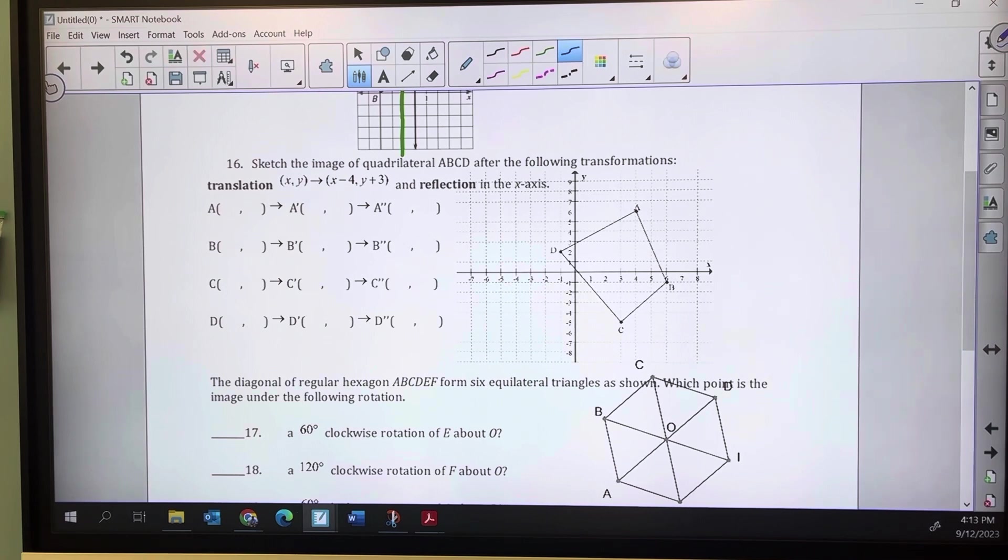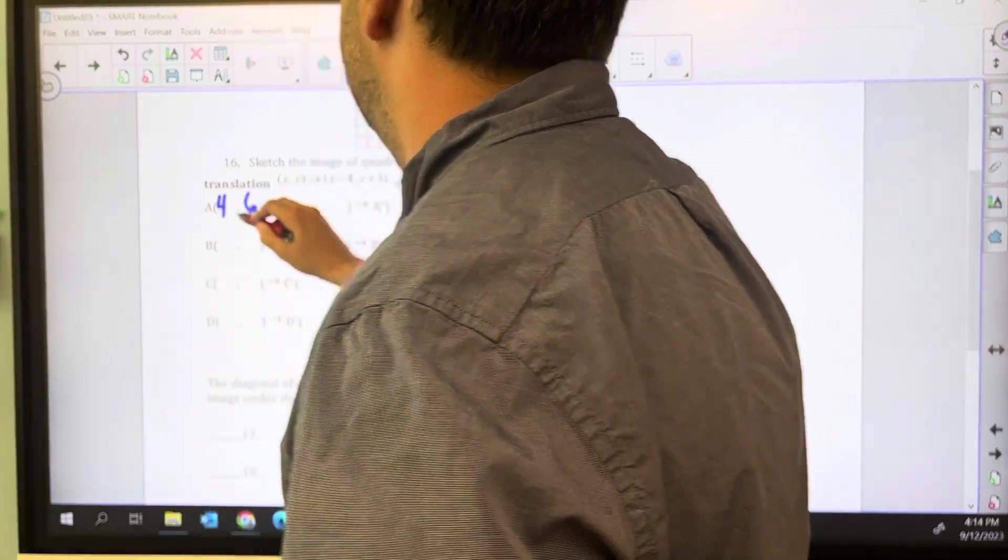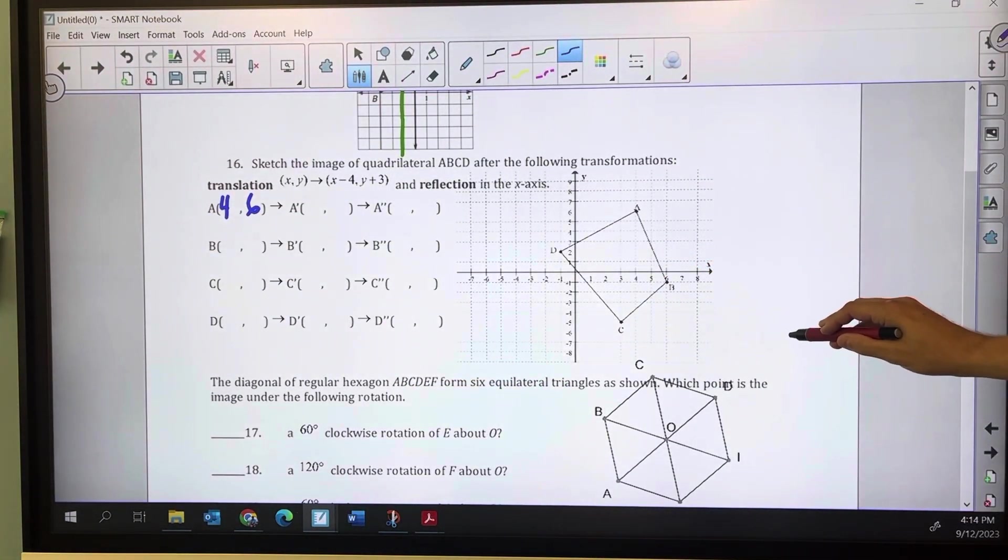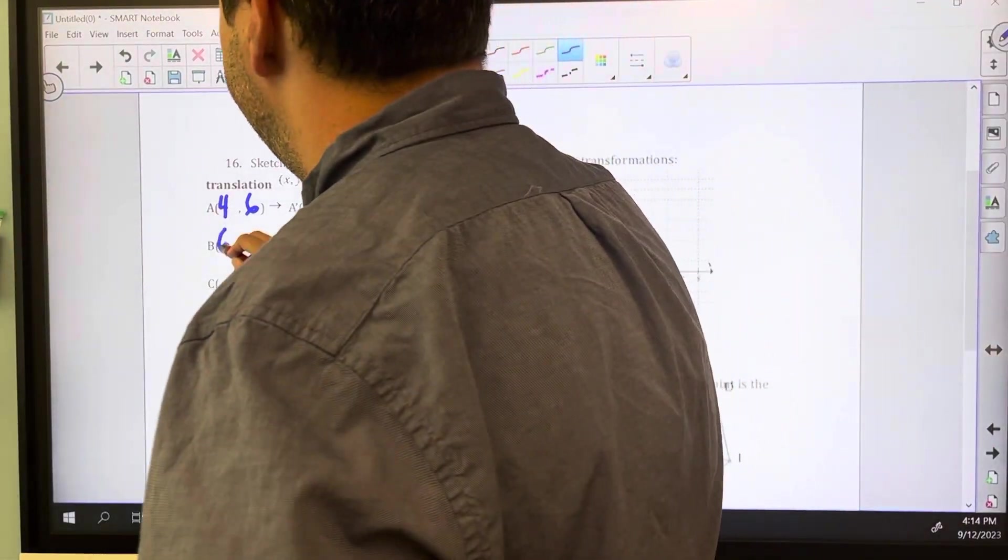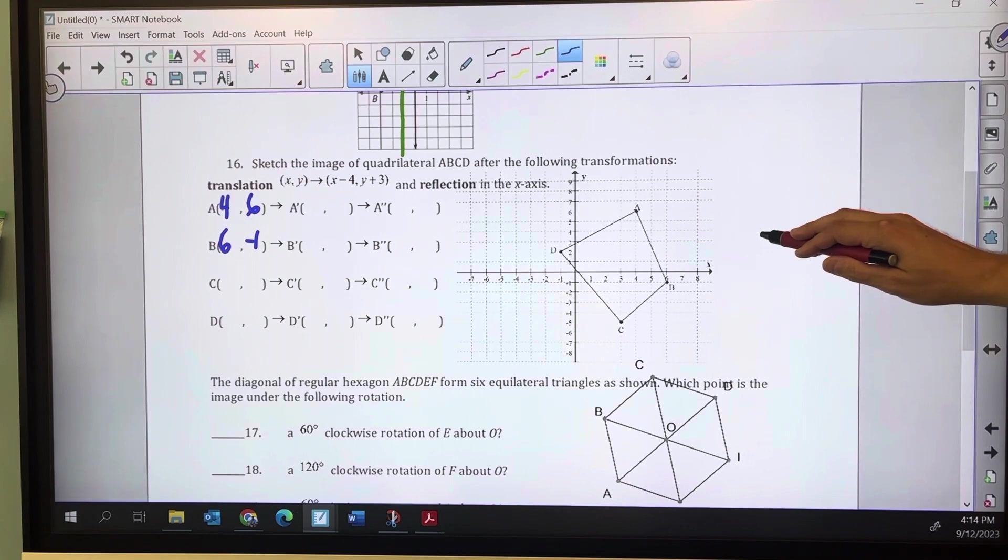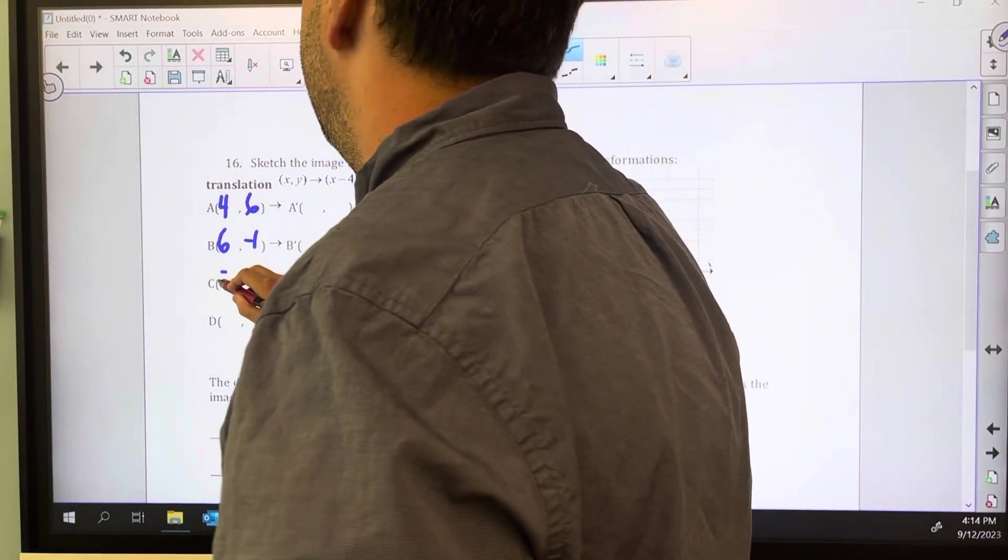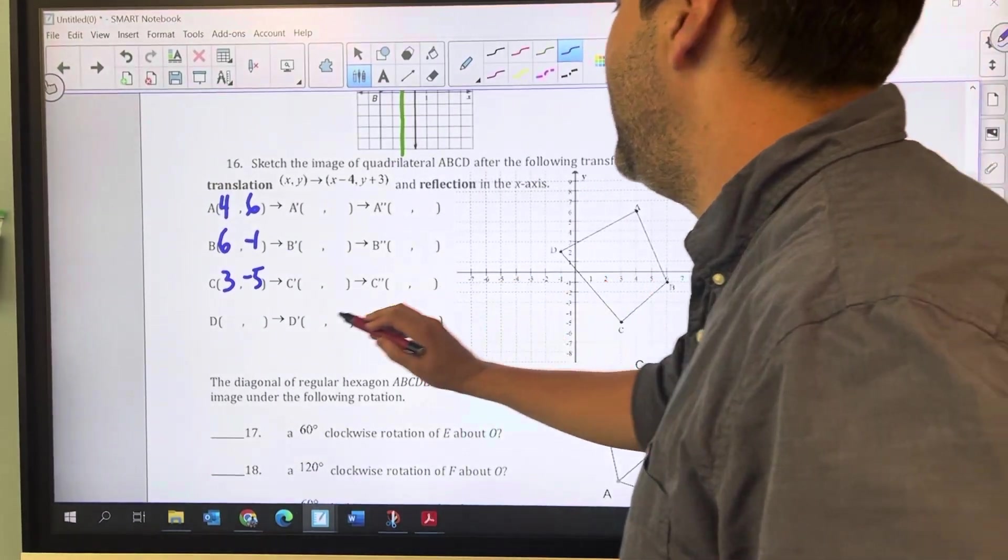Now we have a compound transformation. I want to first deal with the translation, then the reflection. I'm going to start with what A, B, C, and D are: A is (4,6), B is (6,-1), C is (3,-5), and D is (-1,2).